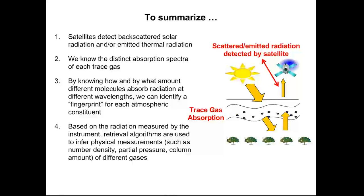To summarize: satellites detect backscattered solar radiation or emitted thermal radiation. Each gas has its own distinct spectral signature. By knowing this and using a radiative transfer model — which describes how radiation from the sun interacts with Earth's atmosphere — we are able to separate out these spectral signatures to actually estimate nose-level concentrations for a gas like nitrogen dioxide. This is a complicated process, not without problems, but over time people are improving these methods and the datasets are becoming much better for air quality applications, even in the last few years.